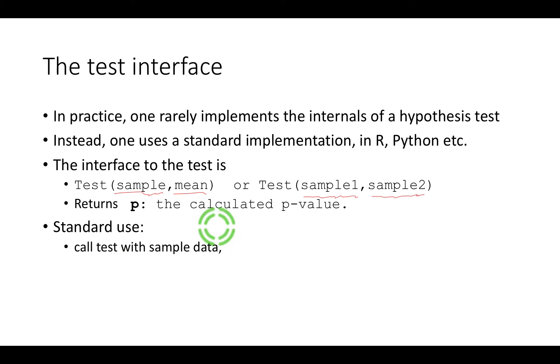So here is how we in general use this kind of procedure. We call the test with the sample data and we get back p and then we check whether p is smaller than alpha. So alpha is this variable that we set in advance let's say 0.05 or 0.01 and we call the test a success if the p-value is smaller than alpha.